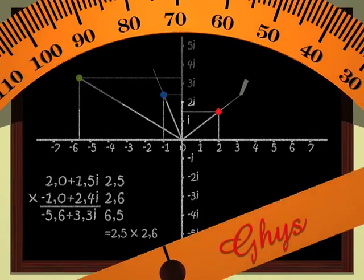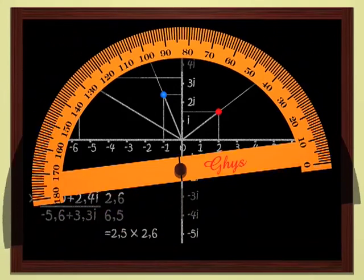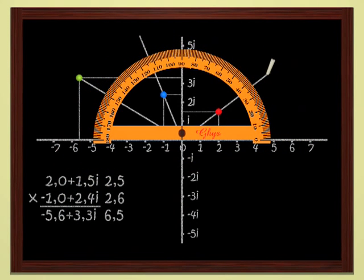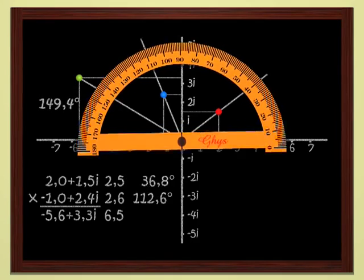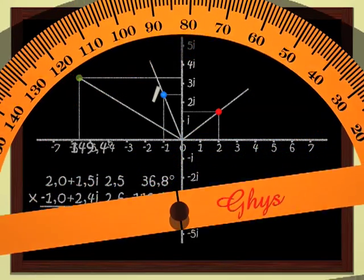The argument of a complex number is measured by the angle between the abscissa axis and the straight line joining the origin to the point. Here, for instance, the argument of the red complex number is 36.8 degrees. The argument of the blue point is 112.6 degrees. And for the product, the green point, we get 149.4 degrees.